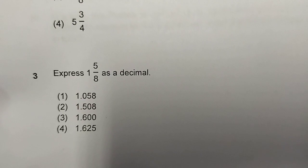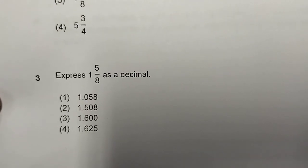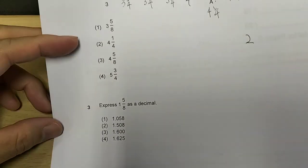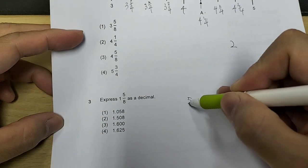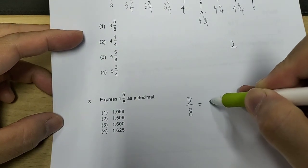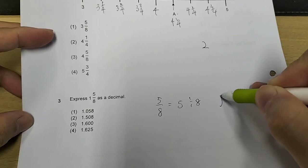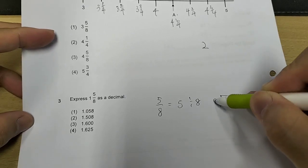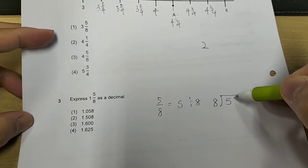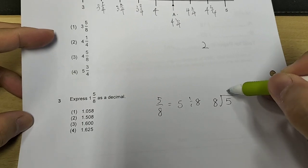Now express 1 whole, 5/8 as a decimal. Now 5/8 also means 5 divided by 8. So you're not allowed to use calculator as you know. Right? 5 divided by 8. That means that, let's do your long division.